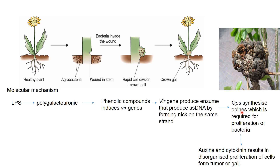The OPS genes synthesize opines, which are required for the proliferation and growth of the bacteria, providing nitrogen and carbon sources. These are also responsible for the production of auxins and cytokinins, which result in the disorganized proliferation of the cells. The tumour formation is due to these auxins and cytokinins.